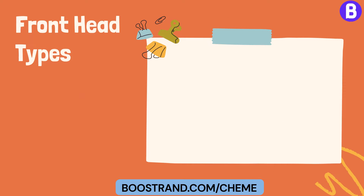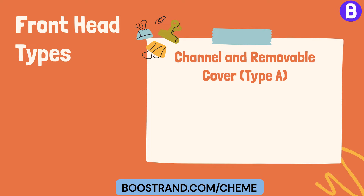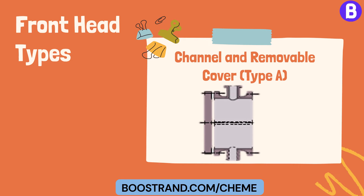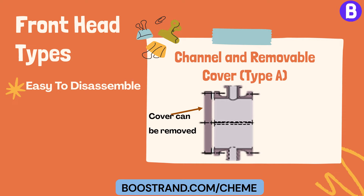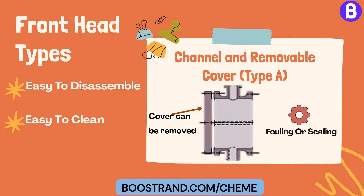Let's start talking about front head types. Channel and removable cover, Type A: this design typically consists of a shell with separate channel covers that can be removed. Type A heat exchangers are more straightforward to disassemble, allowing easy access to the tube bundle for cleaning or repair purposes. They are suitable for applications with fluids that may cause fouling or scaling, requiring periodic cleaning.